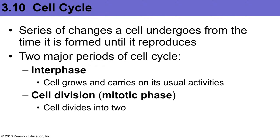There are two major periods of the cell cycle. There's interphase, during which the cell is actually growing, developing, carrying out its day-to-day activities, and replicating its DNA. The other part is the mitotic phase, or cell division — a very short period of the cell's life when it's dividing into two identical cells.